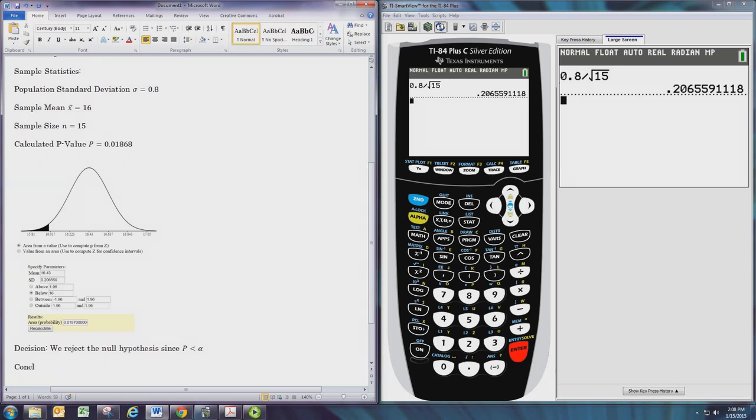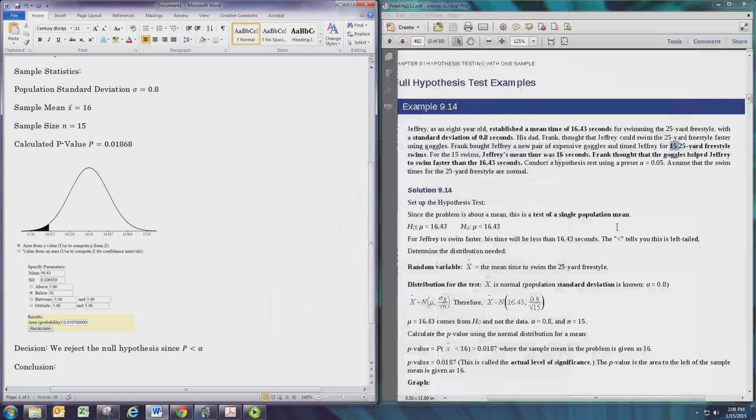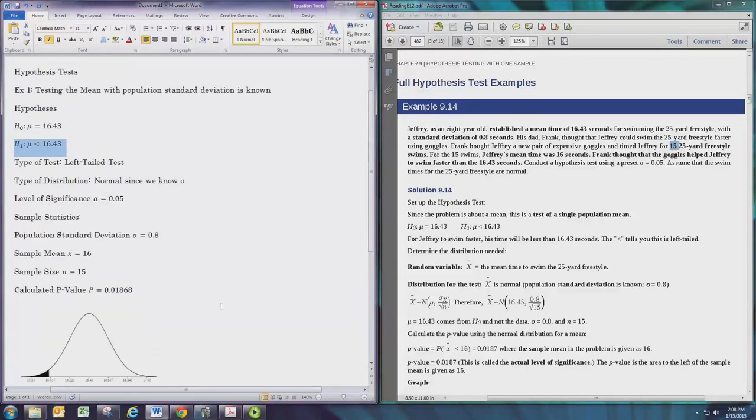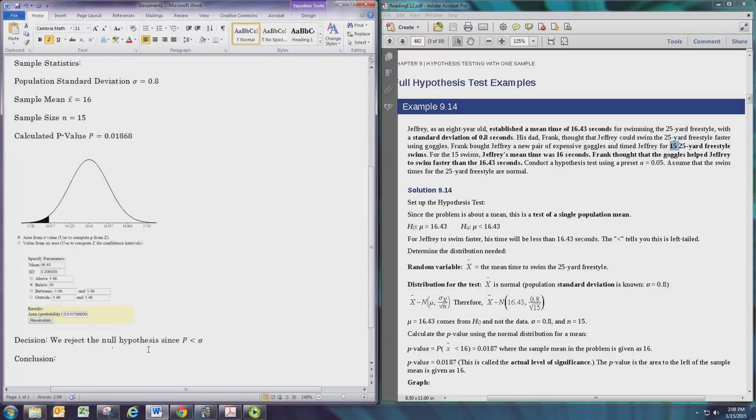Now we need to take this statement and bring it back to the original claim. The original claim was that Frank thought the goggles helped Jeffrey swim faster, and this corresponded to the alternative hypothesis. Since we rejected the null hypothesis, we have enough evidence to support the alternative, which supports Frank's claim.